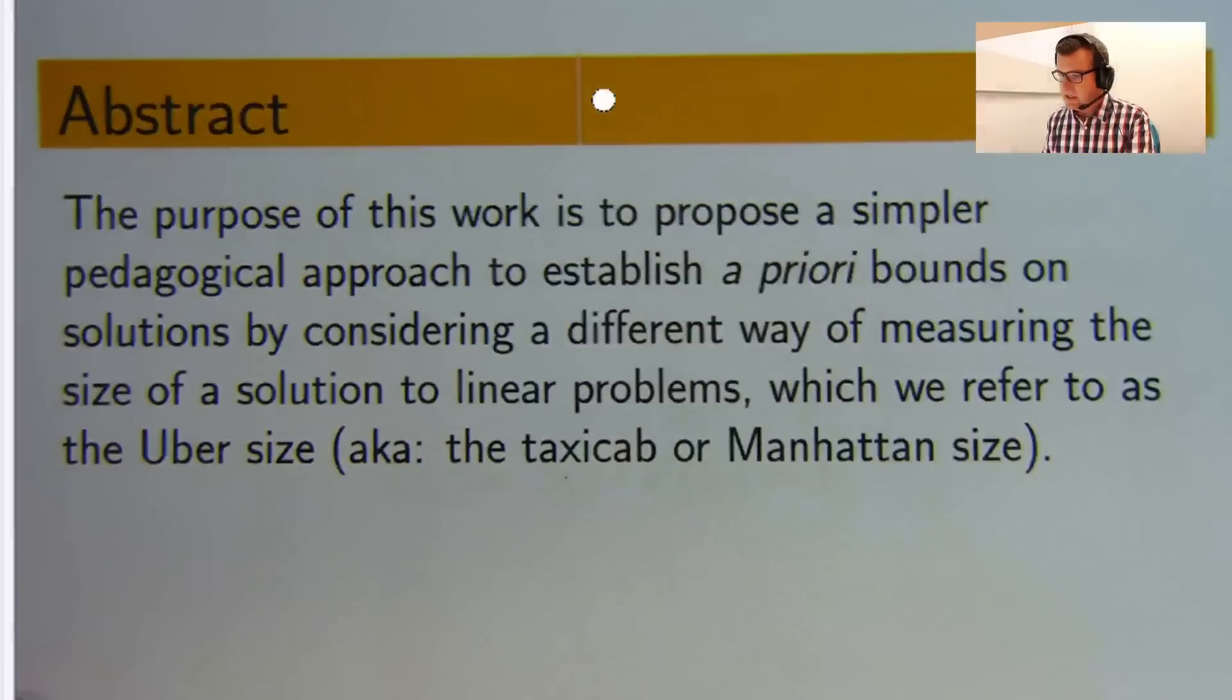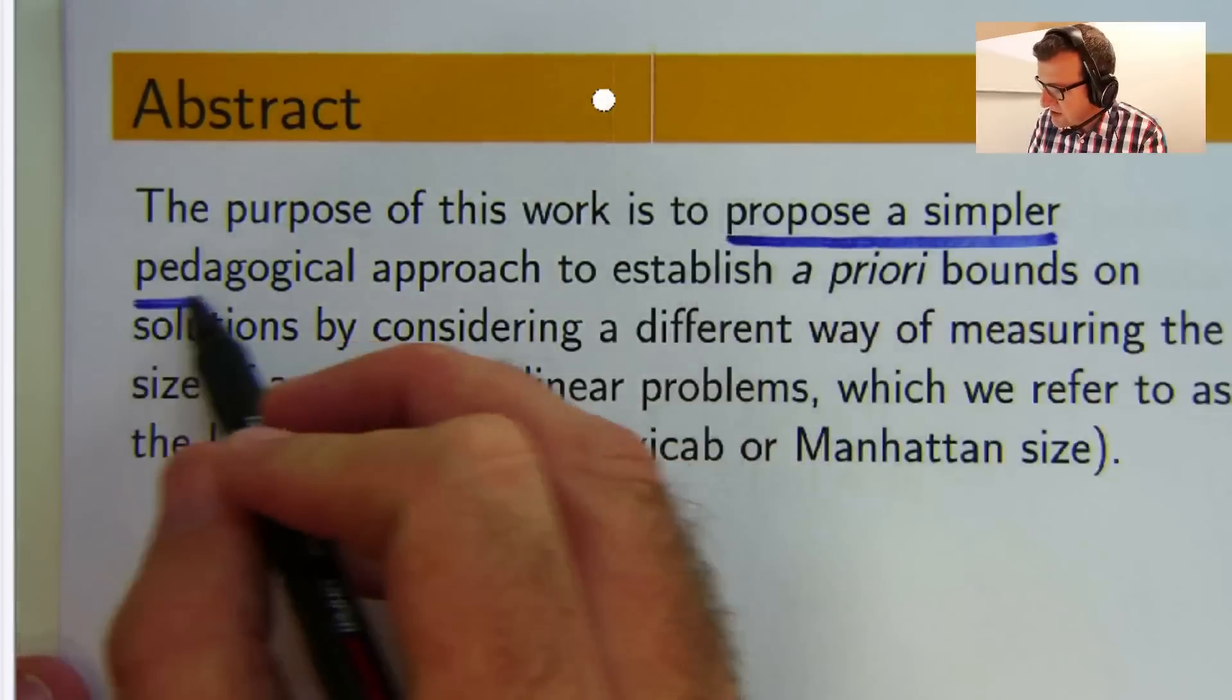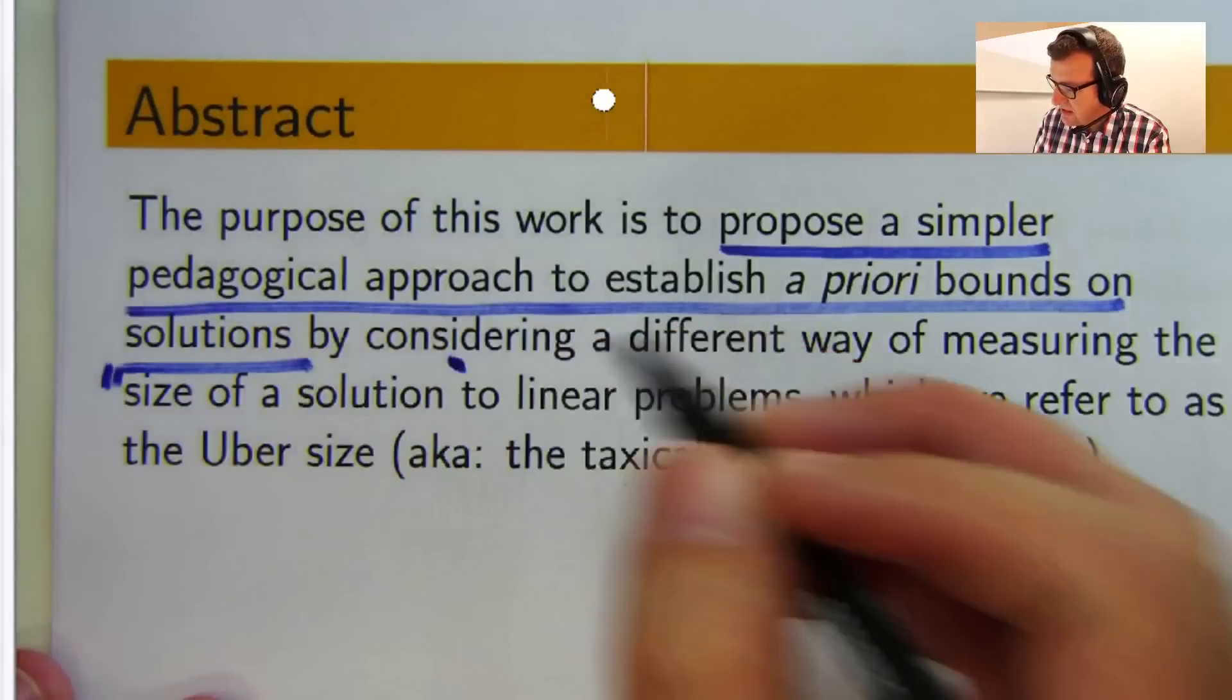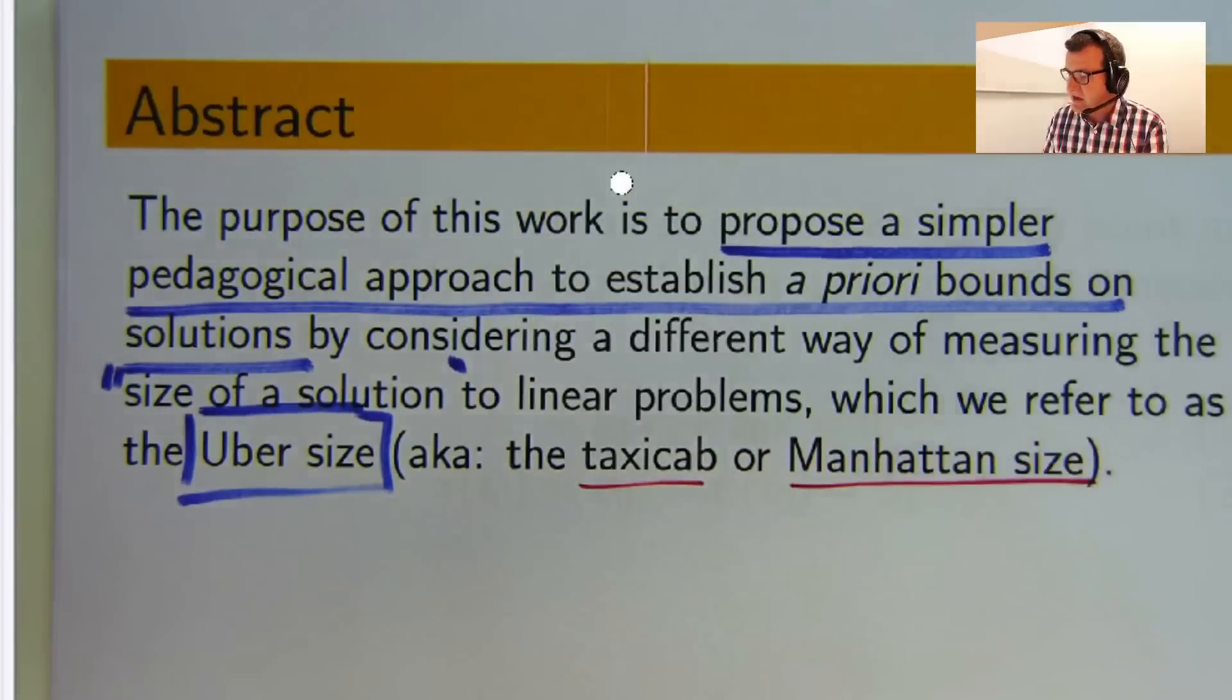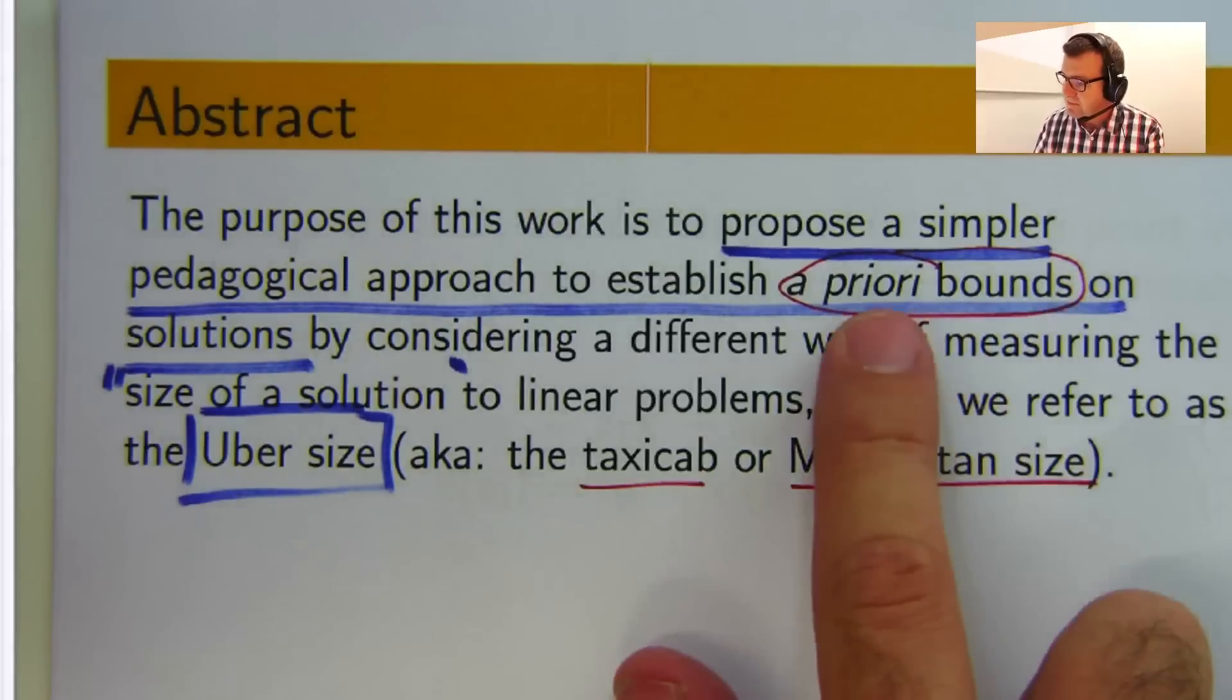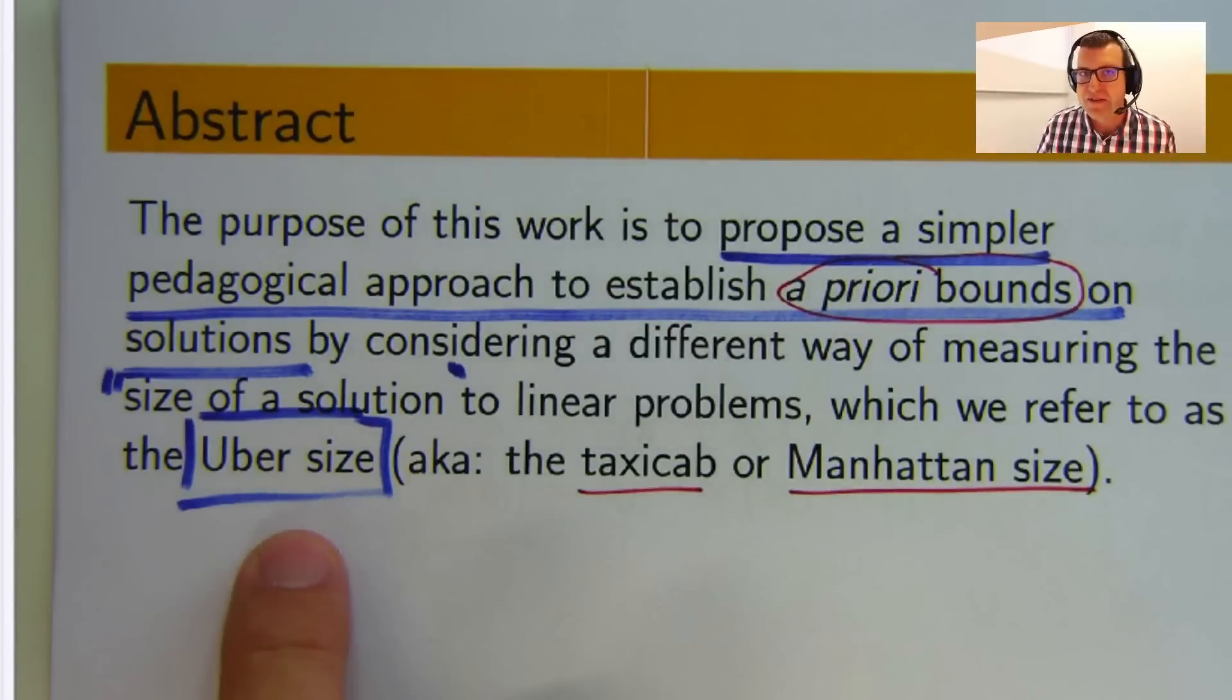So here's the abstract. And the idea, basically, is just to simplify existing approaches. We're going to use a different way of measuring the size of a solution. I've called it the uber size, just because it's kind of modern, but you can also refer to it as the taxicab or the Manhattan size. So a priori bounds, they're just essentially estimates on solutions when you don't actually know explicitly the solution. We're going to obtain these bounds by reconsidering how we measure the size of a solution, and we're going to use a special way called the uber size.